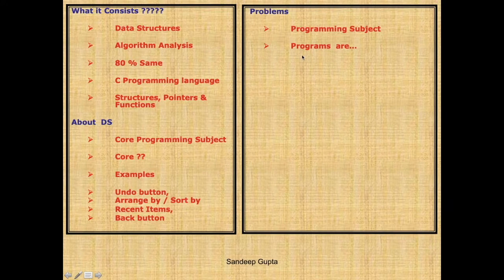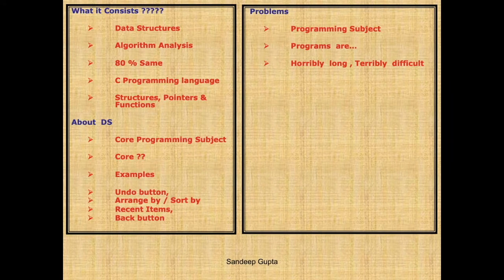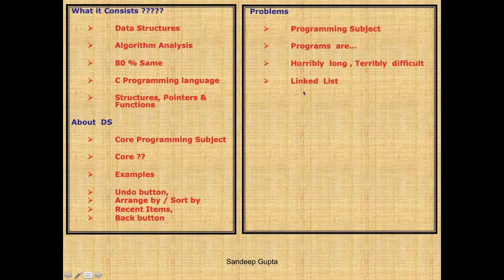Another problem is that programs in Data Structures are horribly long and terribly difficult — it's not an exaggeration. An average program in C programming last semester was about half a page, maybe 15 to 20 lines, like the factorial program. But an average program in Data Structures will be a minimum of six pages — three leaves. There is a topic called linked list in which the program length will be ten pages. This may sound like an exaggeration now, but after three or four lectures you will be convinced.